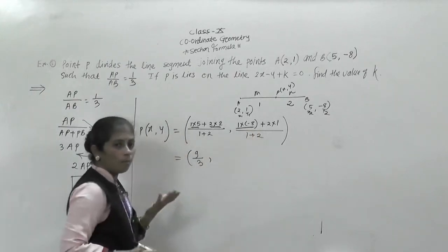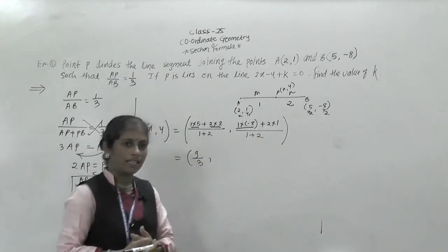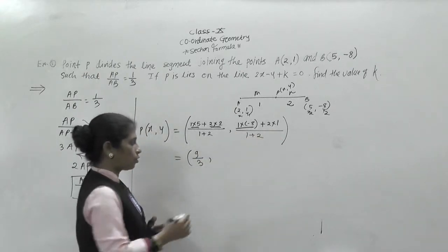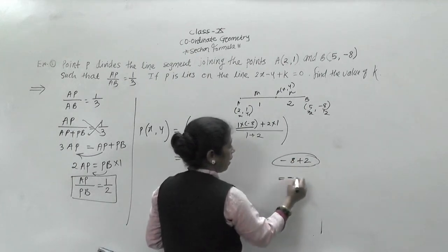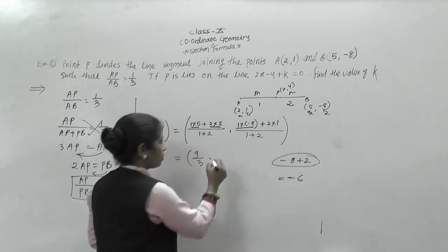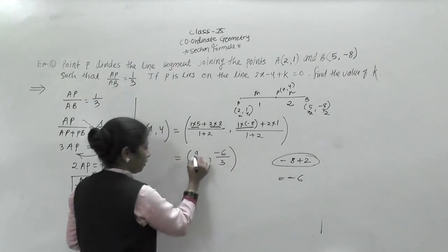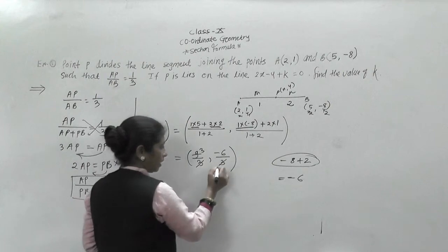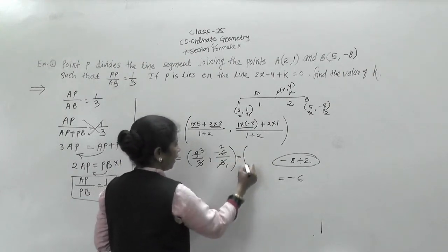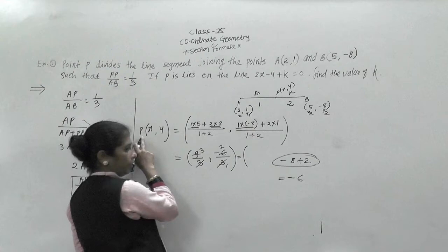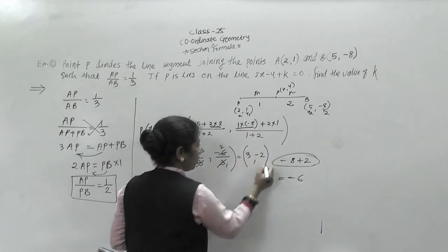For the Y-coordinate: MY2 plus NY1 upon M plus N equals 1 multiplied by minus 8, plus 2 multiplied by 1, upon 3. That gives minus 8 plus 2 equals minus 6, so minus 6 by 3. Therefore 9 by 3 equals 3 and minus 6 by 3 equals minus 2. The coordinates of point P are (3, -2).